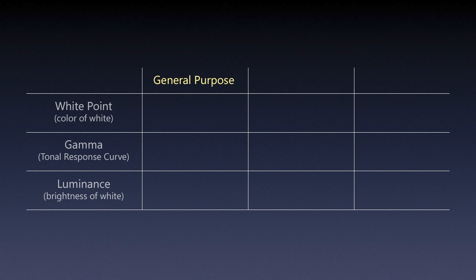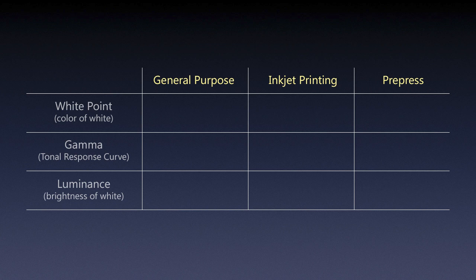I divided it into three categories depending on your needs: general purpose, inkjet printing, and pre-press. General purpose is when you're not too serious about printing your own work and you just need to calibrate your monitor to match the web, or you're posting everything online and need a common calibration that gives you the best compromise. Inkjet printing is when you're trying to match what you see on screen to your home prints. Pre-press is the classical situation when you're retouching or preparing images to be printed in a magazine, for example.